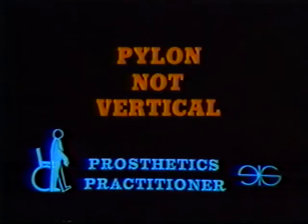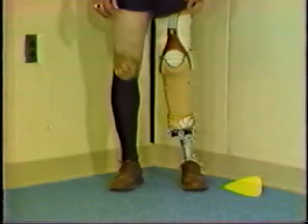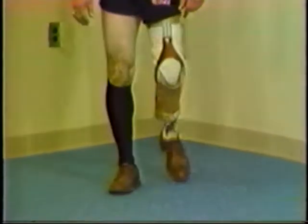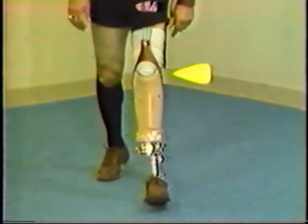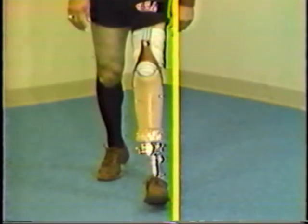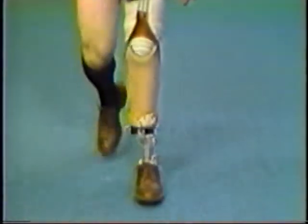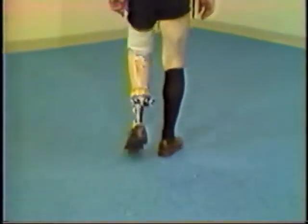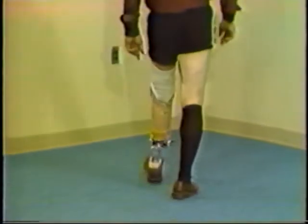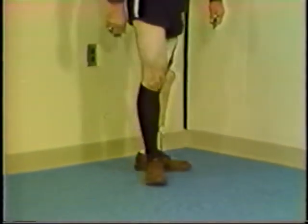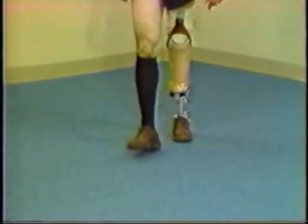The first deviation we will demonstrate is the pylon which is not vertical. As you observe this condition, note that the foot is not flat on the floor. This situation will create excessive socket pressure on either the proximal or the distal portion of the residual limb. The pylon is not perpendicular to the ground and the foot is not flat on the floor at mid-stance. This deviation can be caused by an improper tilt adjustment on the adjustable leg, the foot being too far outset, or the limb being too long. The pylon could tilt the opposite direction also to cause this deviation.